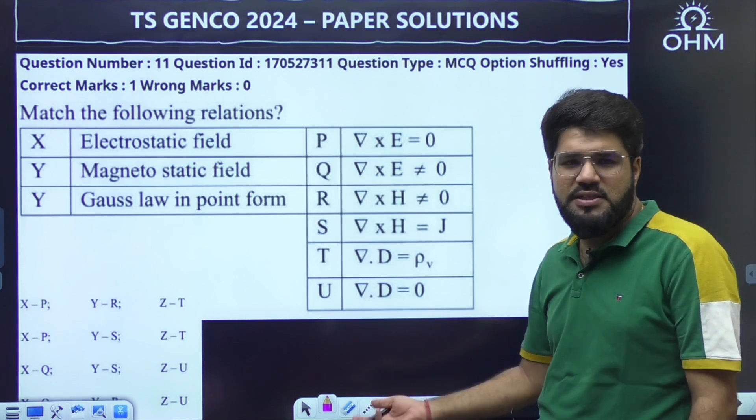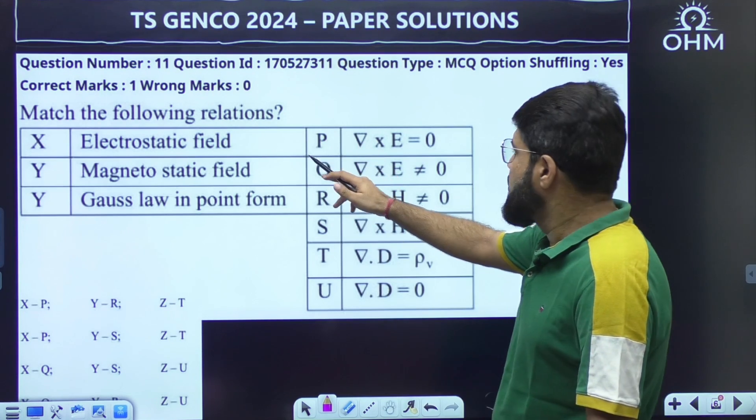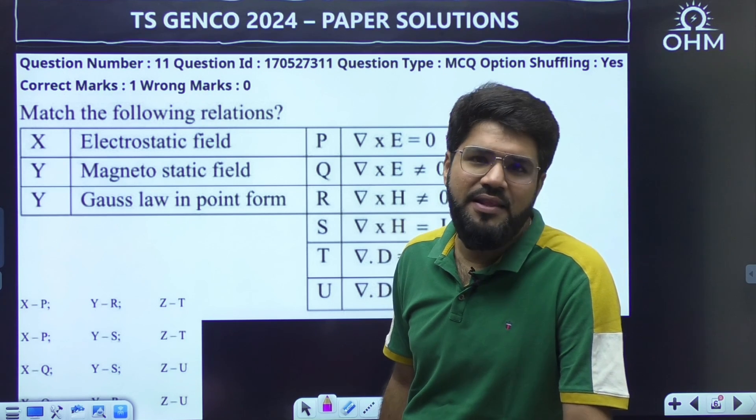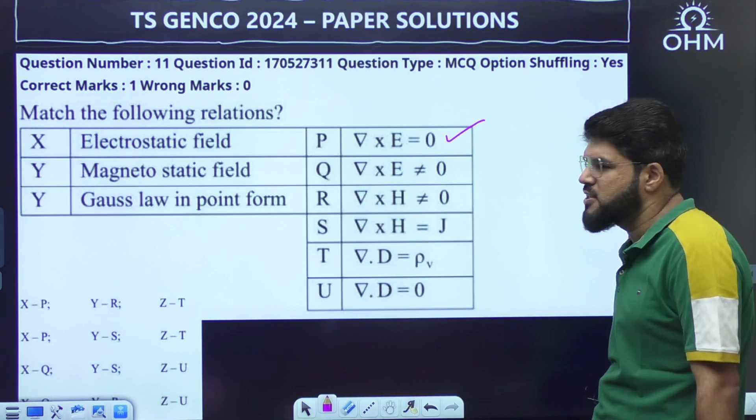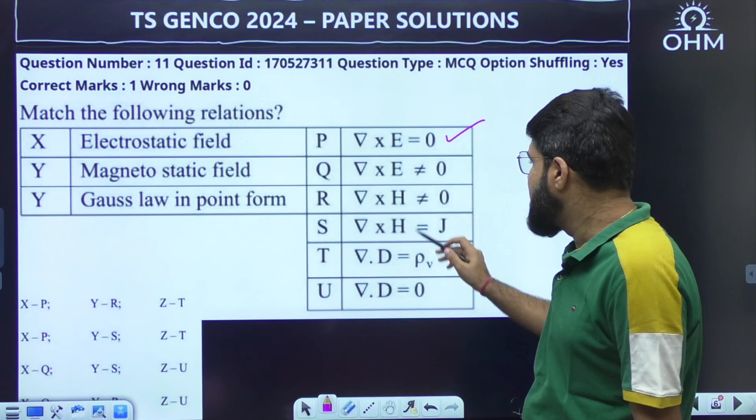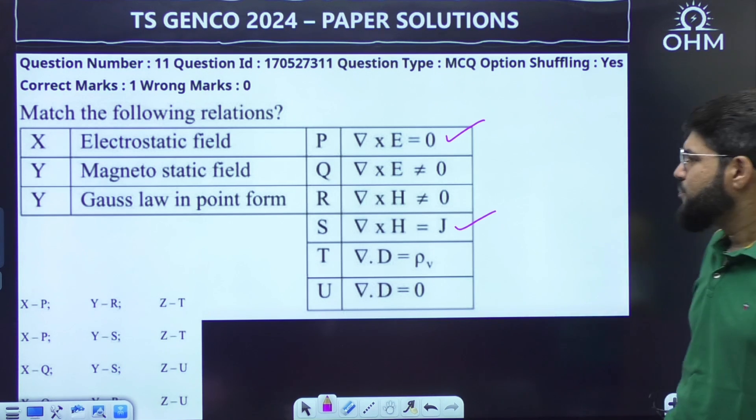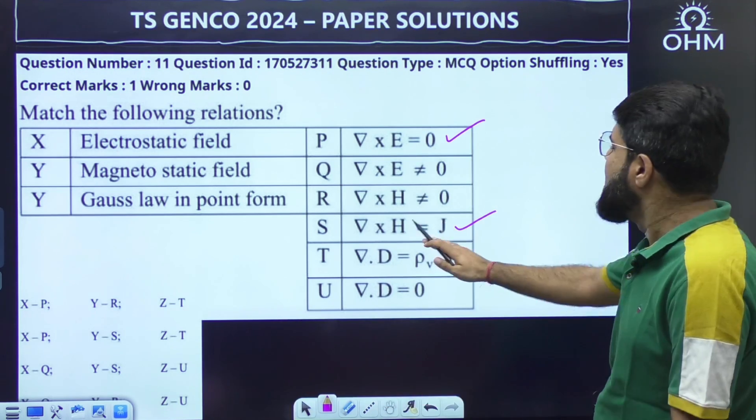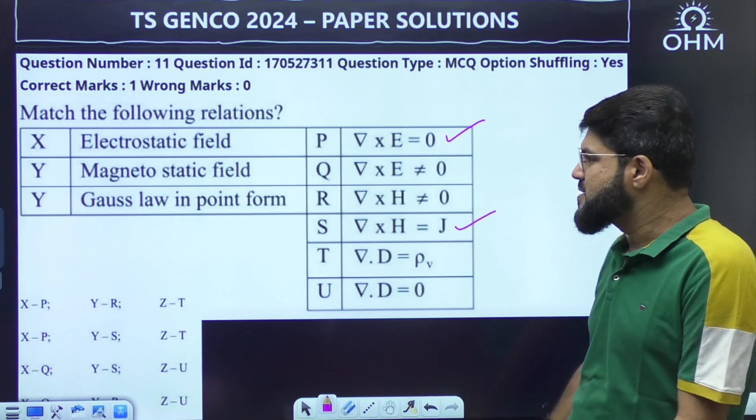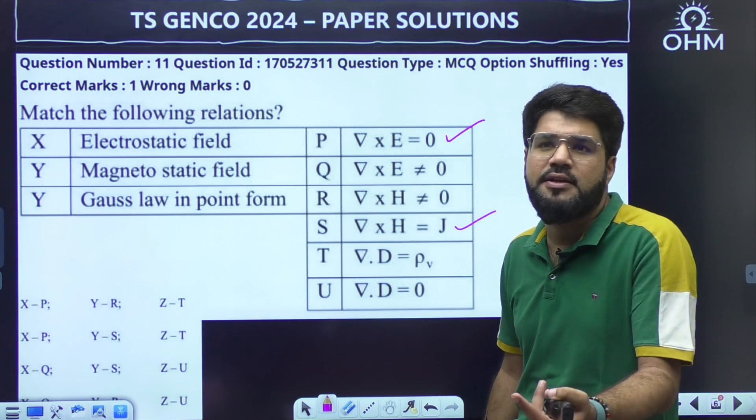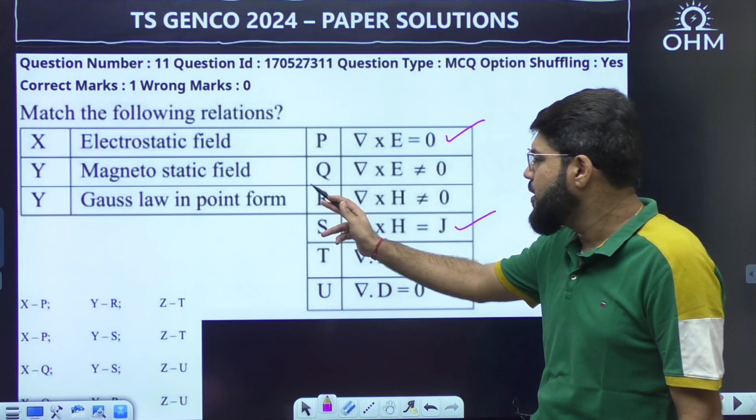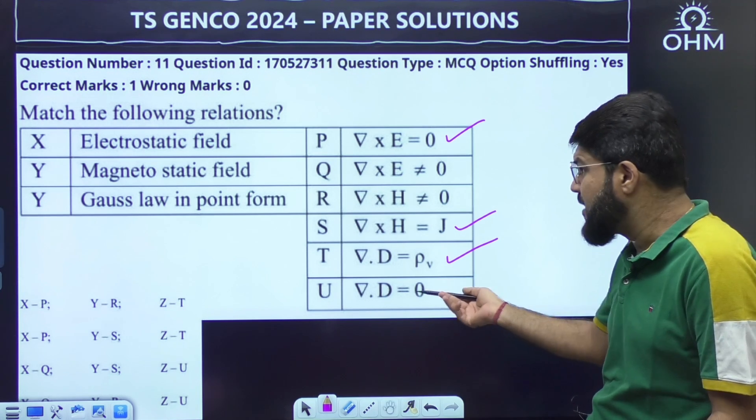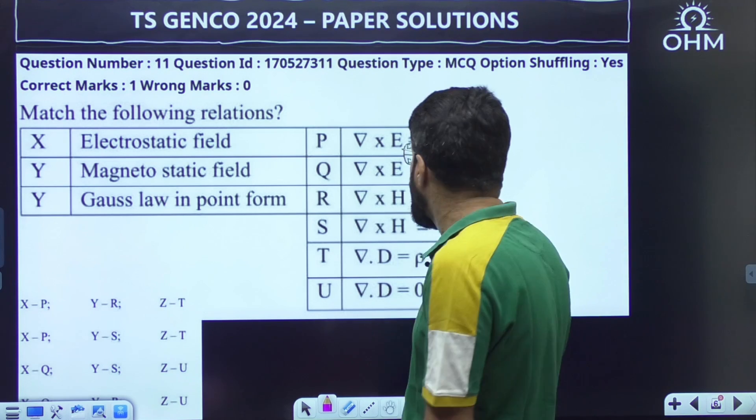This is also a straightforward theoretical question. Match the following relation to electrostatic field. For electrostatic field del cross E is zero. If it is time varying field then del cross E is not equal to zero, then there will be Faraday's law of electromagnetic induction. Now magnetostatic field, Ampere circuit law del cross H equal to J. For a time varying field there is another term, displacement current density that is added to it. Now Gauss law in the point form del dot D equal to rho V. In general, if there is a charge free medium rho V will be zero, but in general del dot D equal to rho V.